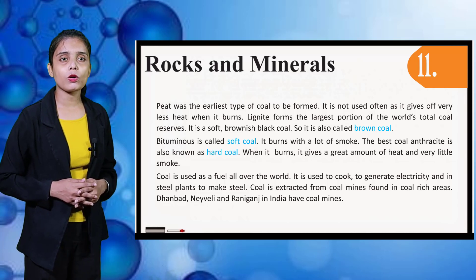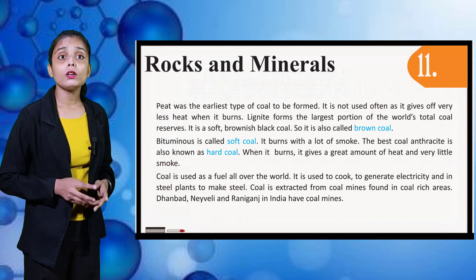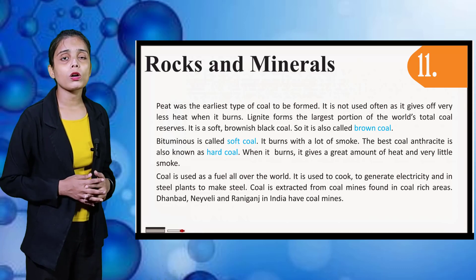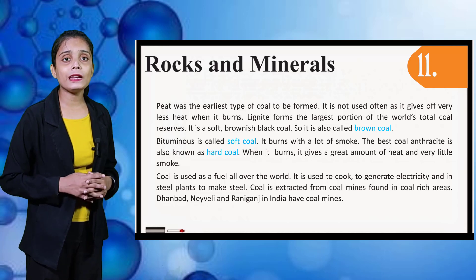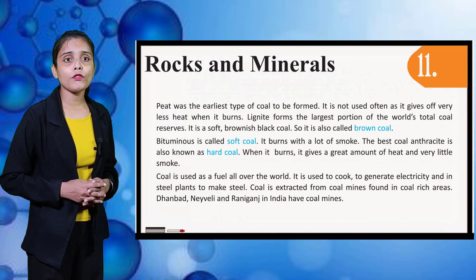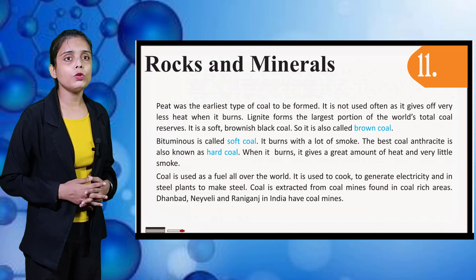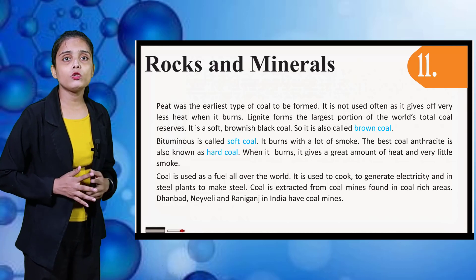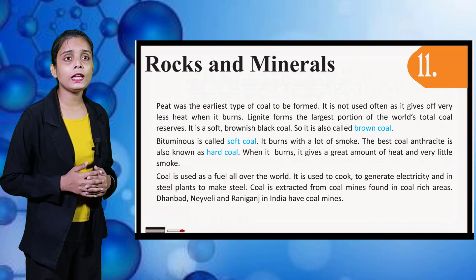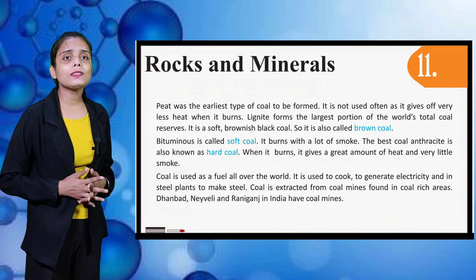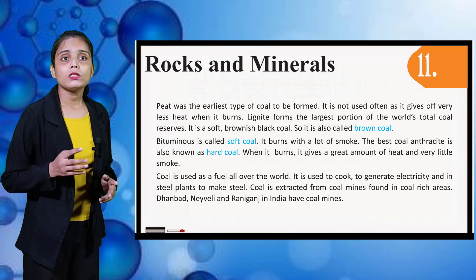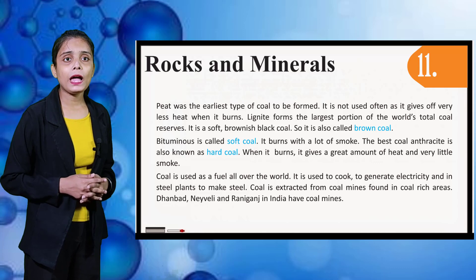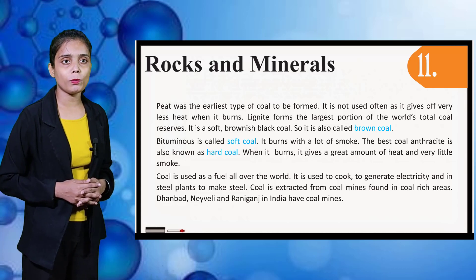Lignite is a soft brownish-black coal, so it is called brown coal. Bituminous is called soft coal; it burns with a lot of smoke. The best coal, anthracite, is also known as hard coal. When it burns, it gives a great amount of heat and very little smoke. Coal is used as a fuel all over the world — to generate electricity and in steel plants to make steel. Coal is extracted from coal mines. Coal-rich areas include Dhanbad, Neyveli, and Raniganj in India.